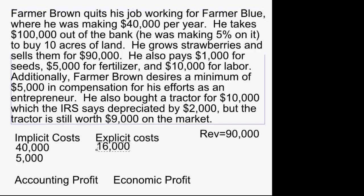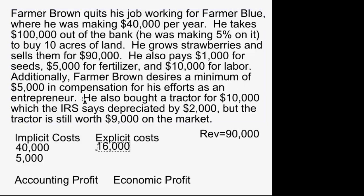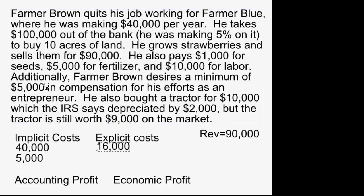Farmer Brown desires a minimum of $5,000 in compensation for his efforts as an entrepreneur — it's just not worth it to him to stay in business without it. Is that implicit or explicit? It's implicit, because it's not money moving from Farmer Brown to someone else; it's something in his mind he has to have or he'll leave the business. That $5,000 is what we call normal profit, or the return to entrepreneurship.